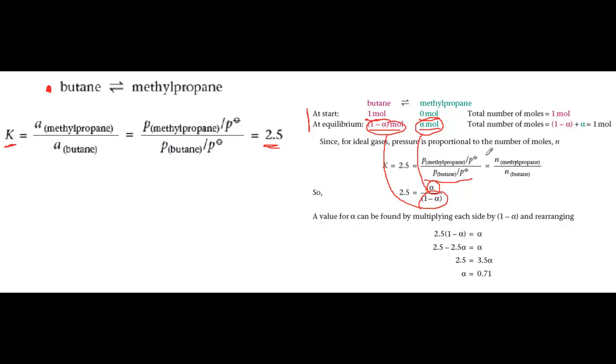So at equilibrium, the reaction vessel contains 0.71 moles of methylpropane product and one minus 0.71, which is 0.29 moles of butane reactant.